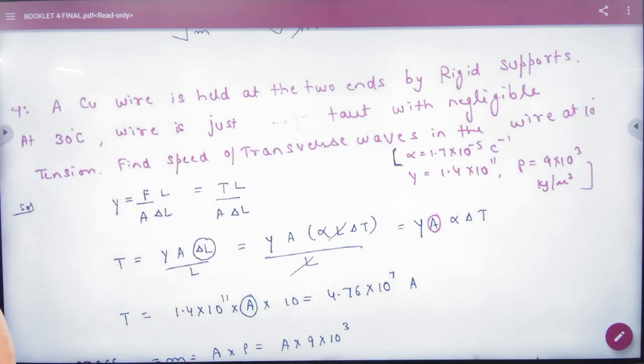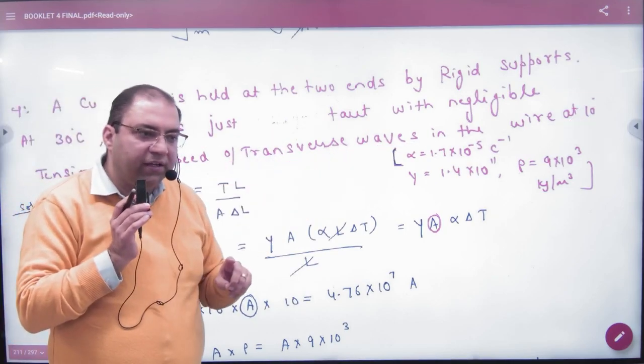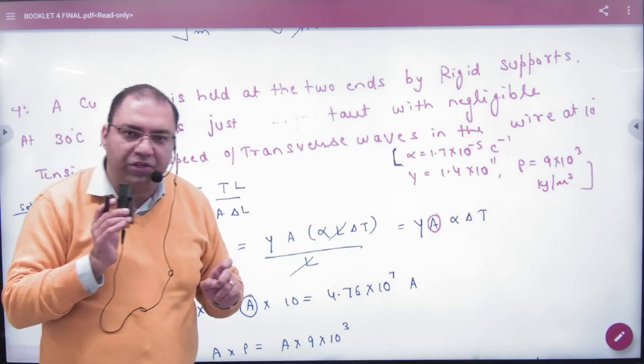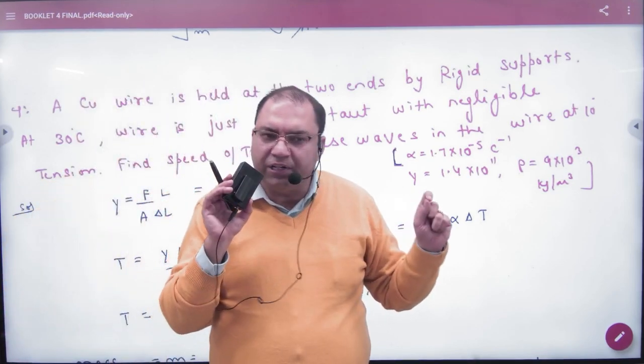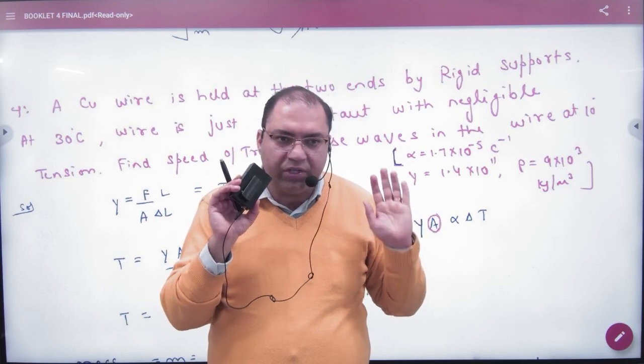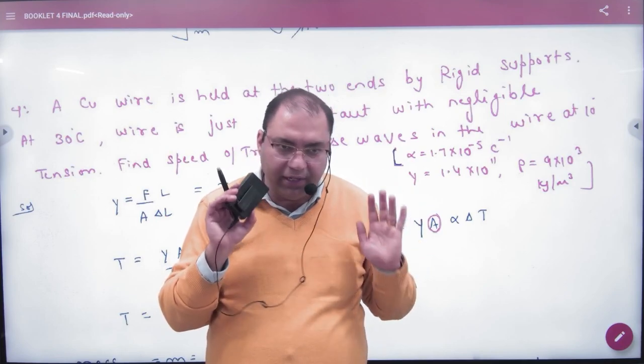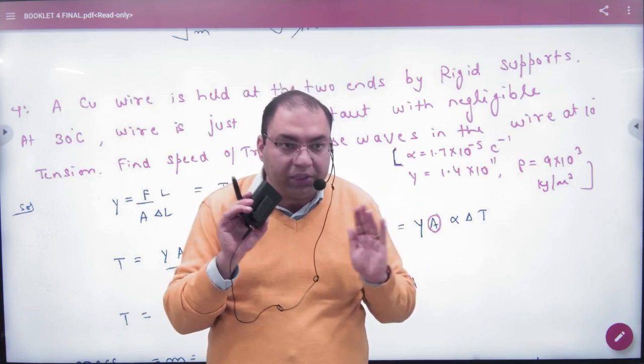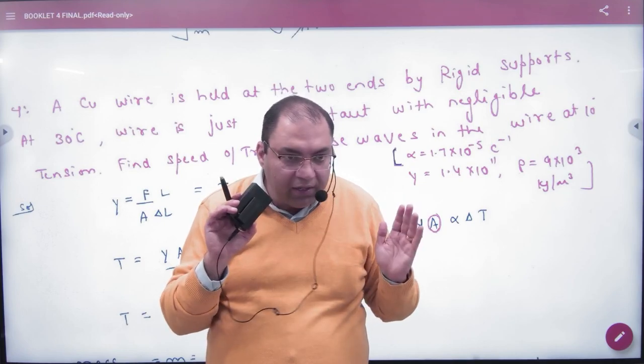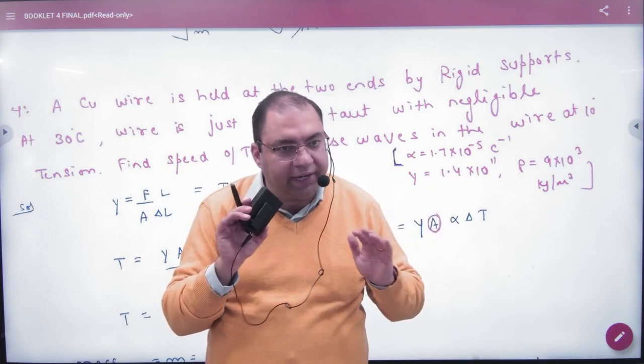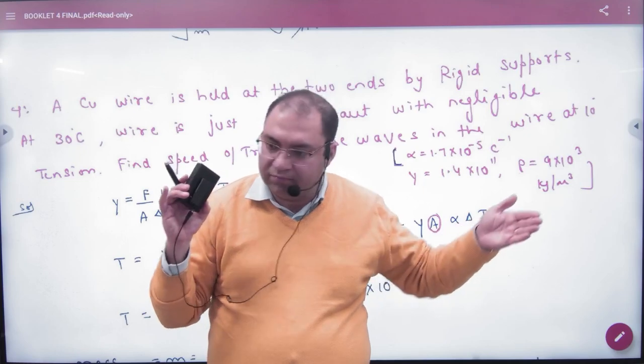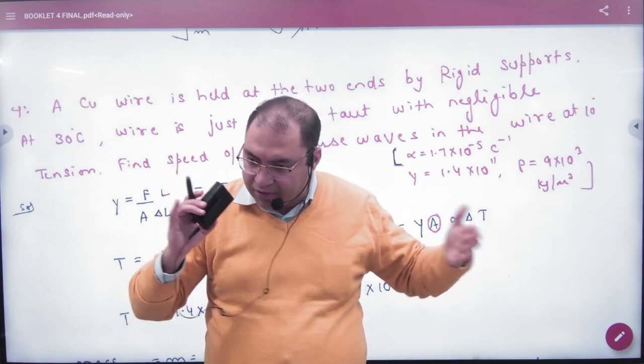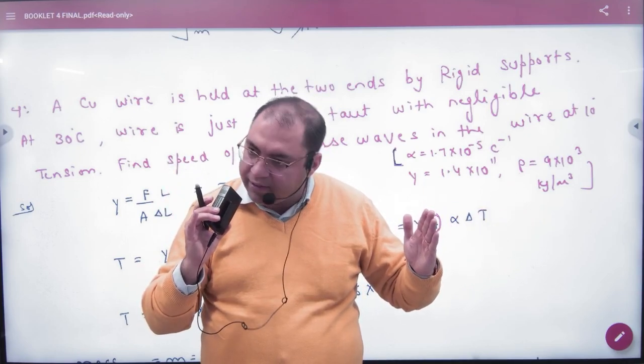Ab saath mein kya given hai: alpha given hai, alpha yaad hai coefficient of linear expansion. Socho, wire bandhi hui hai 2 ends mein. Temperature hai 30, wire kar di thandi. Length kya ho jayegi: choti. Jaga hai nahi, wire ko chhota ho na hai, wire tight ho jayegi. Temperature kam karne se wire bandhi hui hai 2 ends mein, temperature kam ho gaya.